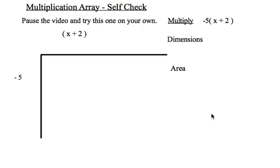At this point in time, you can pause this video and try your hand at multiplying these out. So, negative 5 times the bracket of x plus 2. And see what you come up with.